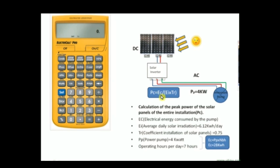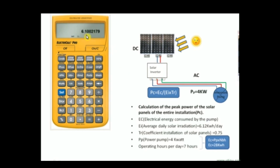We already saved EC (electrical energy) in storage one, so we bring it back by clicking RCL then one — that gives us 28 kilowatt-hours. We divide this by the value stored in memory two (EI × TR = 4.59) by clicking RCL then two. The result is the peak power of the solar installation: 6.1 kilowatt-peak. This is the power we need to drive our pump all day.